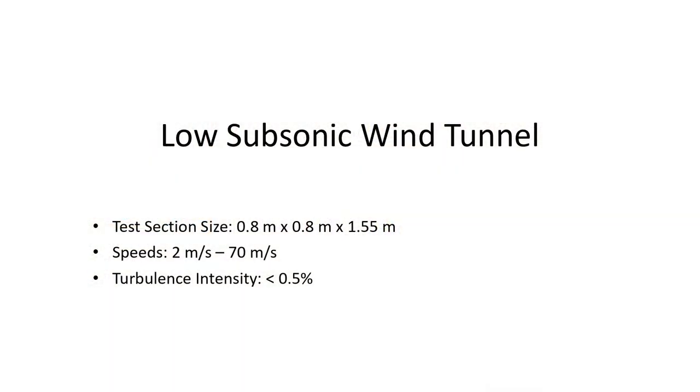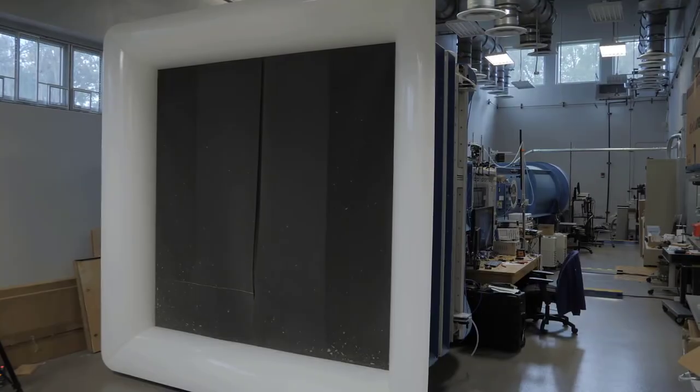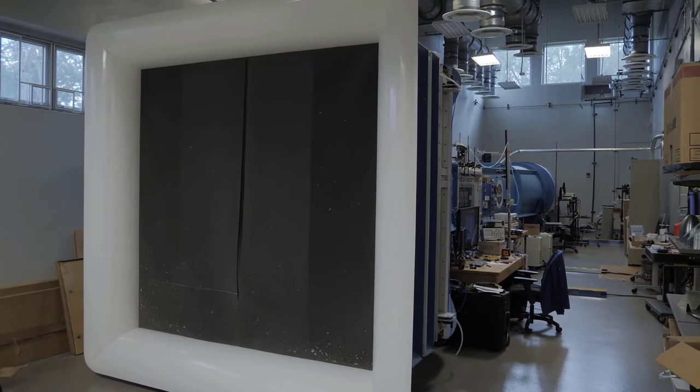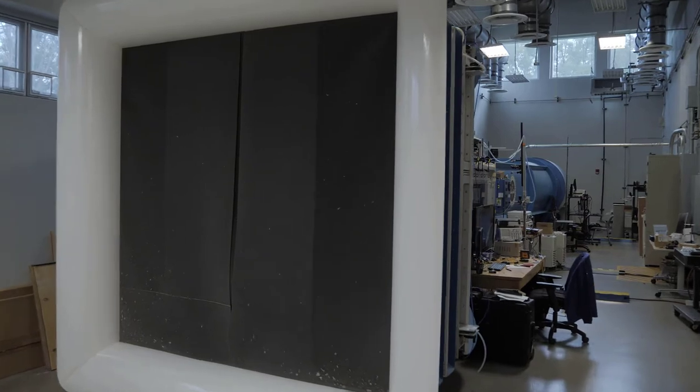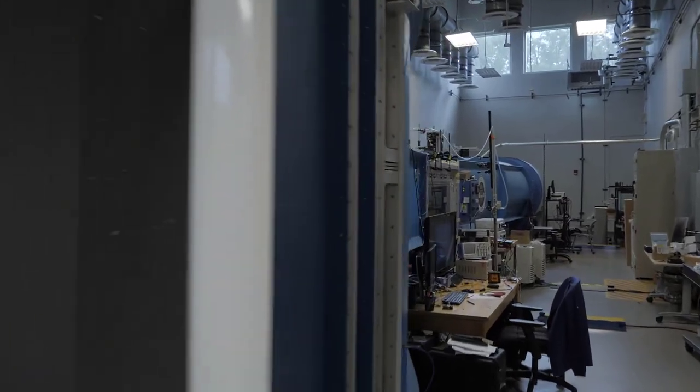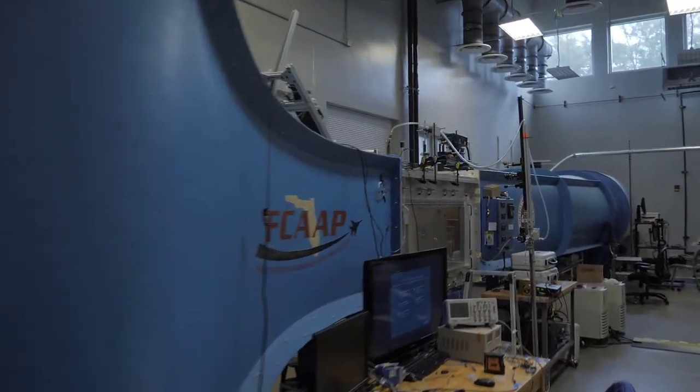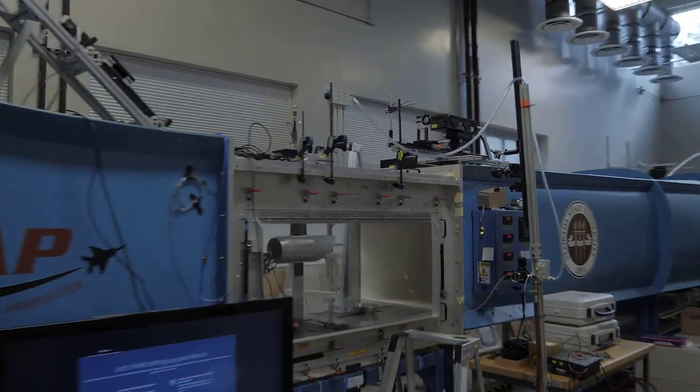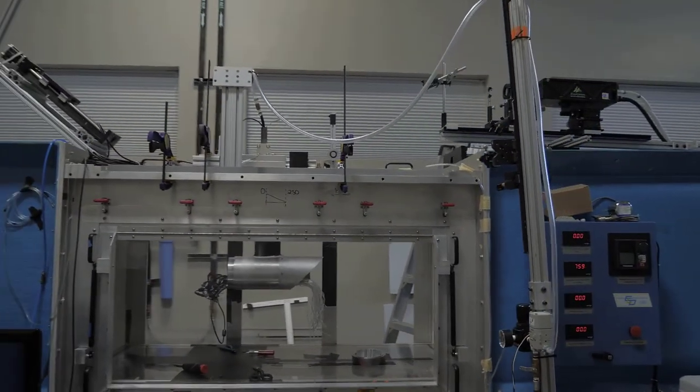The low-speed wind tunnel has a test section area of 0.8 meters by 0.8 meters. The low-speed wind tunnel is a suck-down, open-loop wind tunnel. The flow is driven by a 200 horsepower fan that allows for the wind tunnel to achieve speeds of nearly 80 meters per second, or 180 miles per hour.